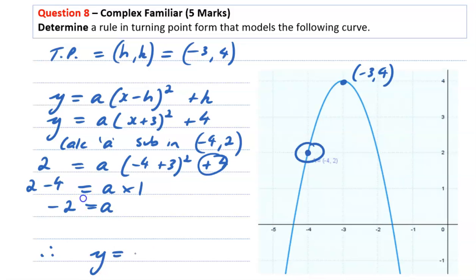Therefore the equation that models this parabola is negative 2, x plus 3 squared, plus 4.